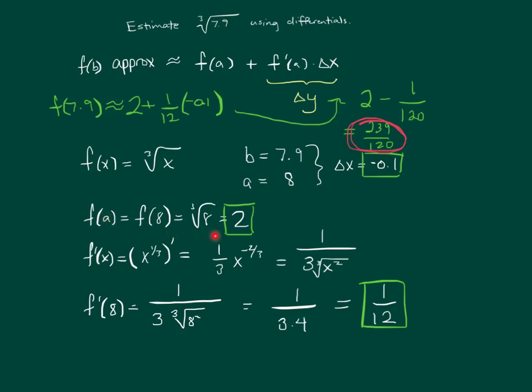Plugging that into the function gives us the value 2. Plugging 8 into the derivative gives us f prime of 8, which is 1 twelfth. We put it all together in the approximation formula, and we see that the cube root of 7.9 is about 1 one hundred and twentieth less than 2. And if you like, you can say that delta y here is negative 1 over 120.